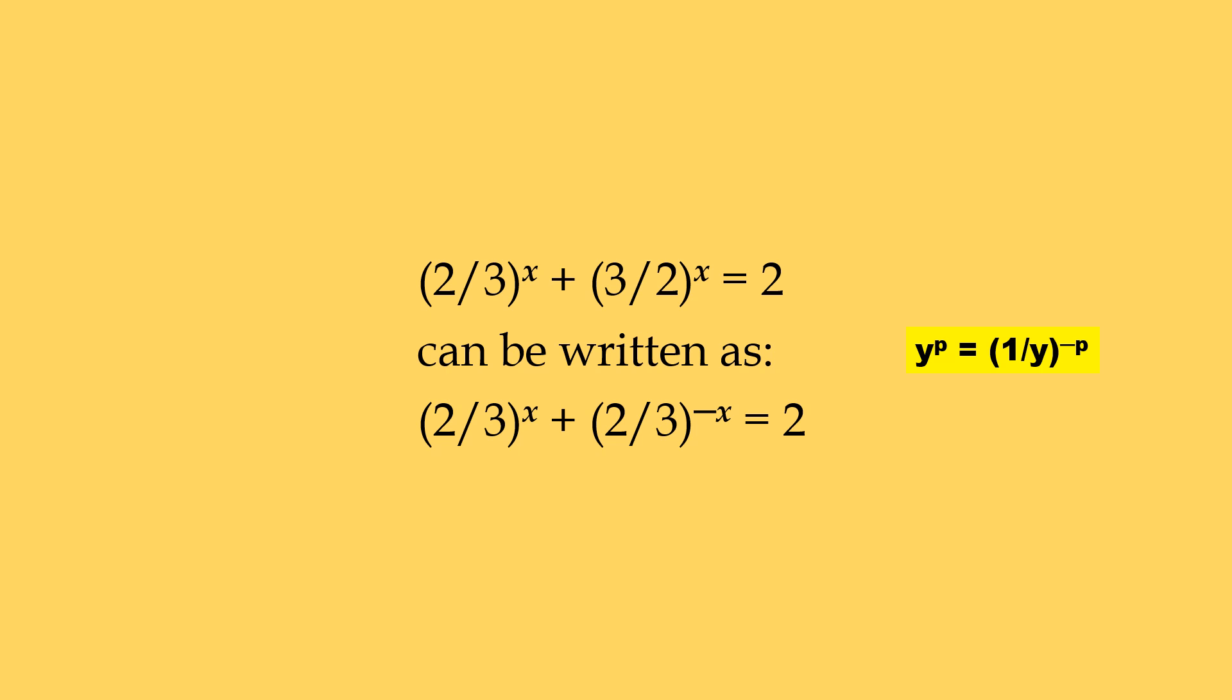First, we make the two bases equal. For this, we write 3 upon 2 to power x as 2 upon 3 to power minus x. Any number to any power is equal to its reciprocal to a negative power.